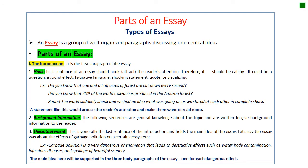Parts of an essay. An essay, by definition, is a group of well-organized paragraphs discussing one central idea, which is put in the thesis statement. The introduction is the first paragraph of the essay. You always begin with a hook — it's the first sentence, and it's called a hook because it should attract the reader's attention. Therefore, it should be catchy. It could be a question, a sound effect, a figure of speech, a shocking statement, a quote, or visualizing — anything that would attract the reader to your essay.